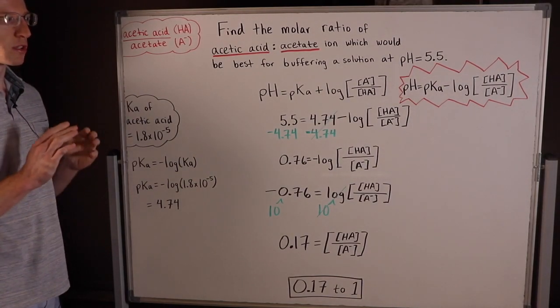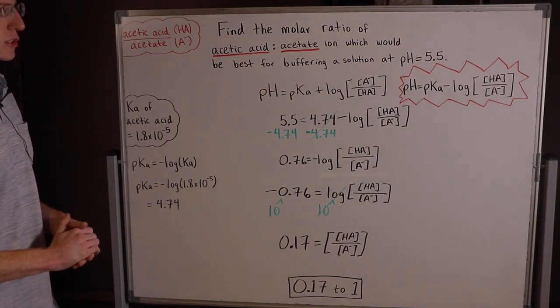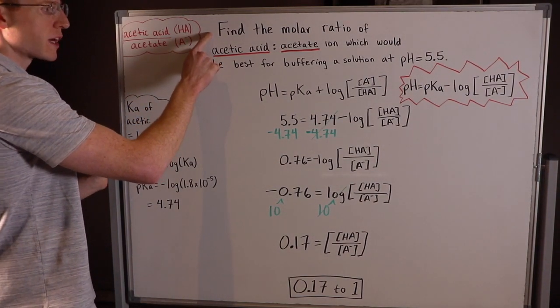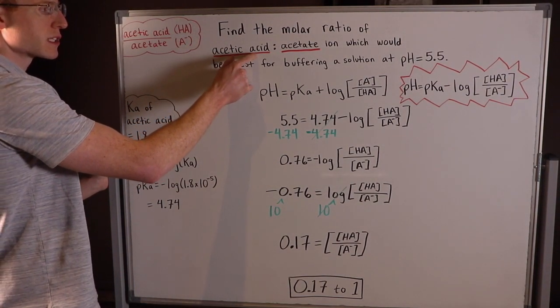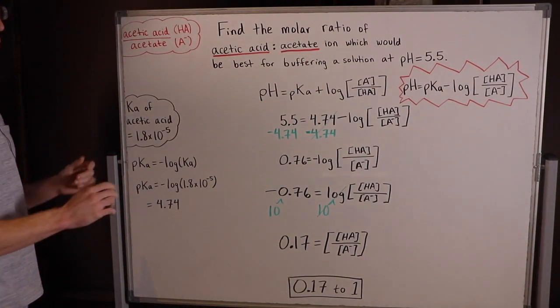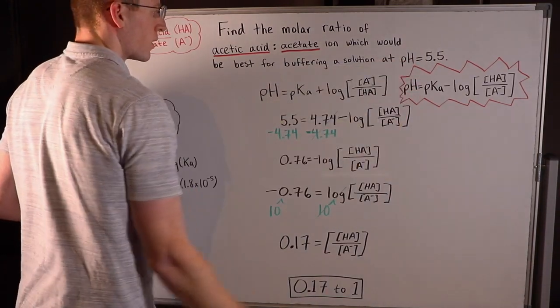Hey guys, in this video I want to show you how you can use the Henderson-Hasselbalch equation to solve problems. So this problem says find the molar ratio of acetic acid to acetate ion which would be best for buffering a solution at pH 5.5.